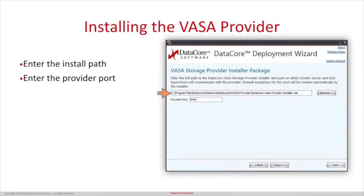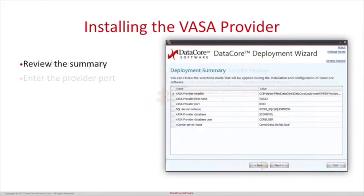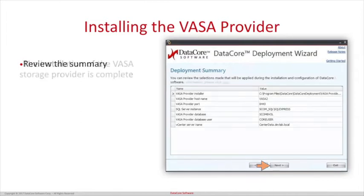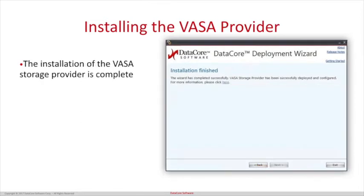Now enter the install path and the provider port and click Next. Lastly, review the deployment summary. If the settings are correct, click Next. The installation of the VASA storage provider is now complete. Click Exit.